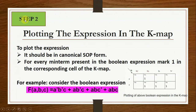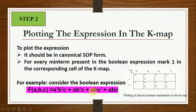Step 2 is plotting the expression in the KMAP. To plot the expression, first the expression must be in canonical SOP form — this is very important. Then for every minterm present in the Boolean expression, mark 1 in the corresponding cell of the KMAP. Consider an expression of three variables A, B, C: A-bar B-bar C + A B-bar C + A B C-bar + A B C. Let us plot this expression on the KMAP.